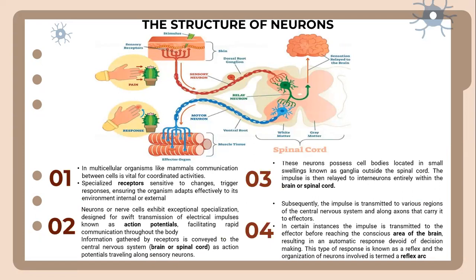In multicellular organisms like mammals, communication between cells is vital for coordinated activities. Specialized receptors sensitive to change trigger responses, ensuring the organism adapts effectively to its environment, whether internal or external. When you accidentally touch a sharp object, the nerve cells exhibit exceptional specialization designed for swift transmission of electrical impulses known as action potentials.